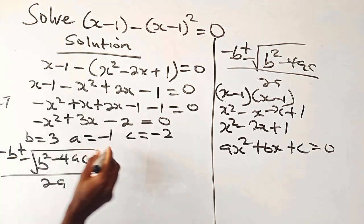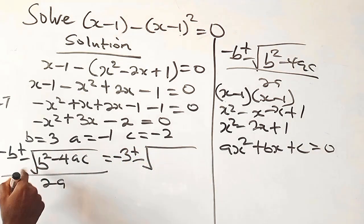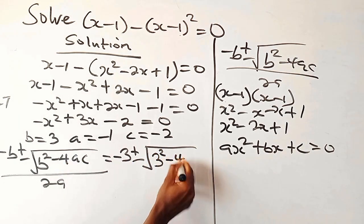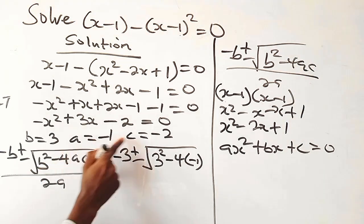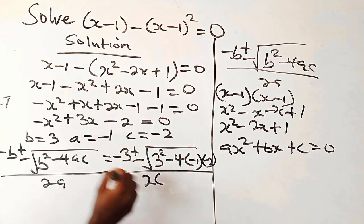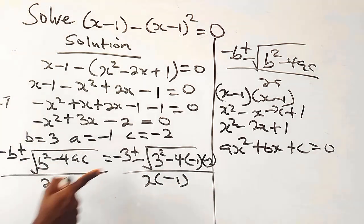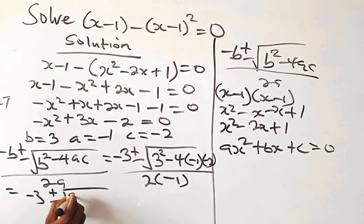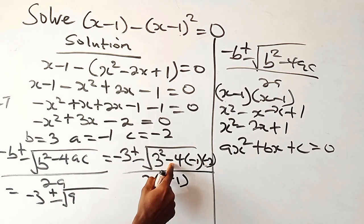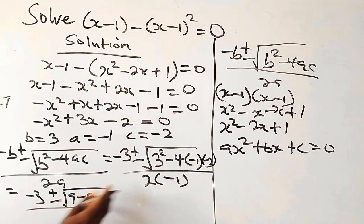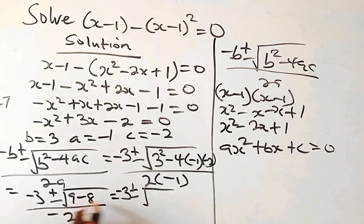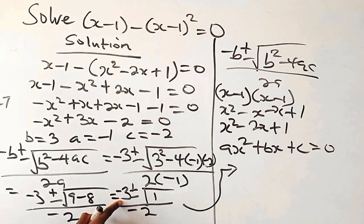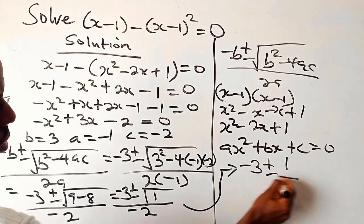My b is 3, so that is minus 3, plus or minus square root of b squared — that is 3 squared, which is 9 — minus 4 times a, which is minus 1, times c, which is minus 2. Divided by 2 times minus 1, which is minus 2. Minus and minus is plus, so we have 9 plus 8 equals... the square root simplifies, over minus 2.